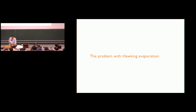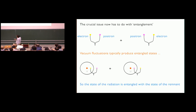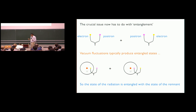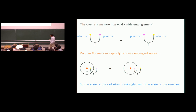The real problem comes from entanglement. When a pair is produced from the vacuum, you don't get a definite electron inside/positron outside — you get a superposition of both configurations. That's an entangled state: the particle doesn't have a state by itself; it's an electron if the other is a positron, and vice versa. Overall the system has a well-defined state, but individually neither particle does. Vacuum fluctuations typically produce entangled pairs, so the radiation particle is entangled with whatever is left inside.